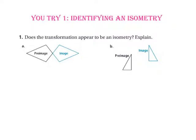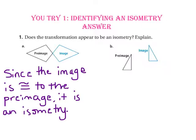Pause the video and do you try number 1. In part A, since the image is congruent to the pre-image, it is an isometry of the pre-image. In part B, the image is also congruent to the pre-image, so it is an isometry as well.